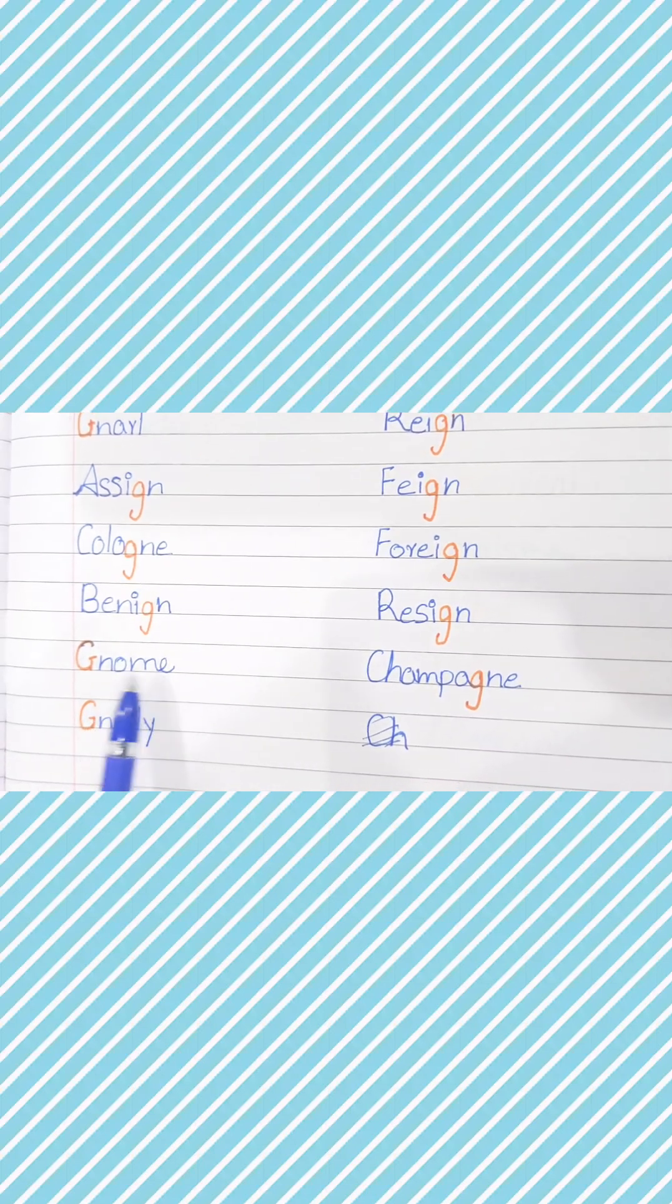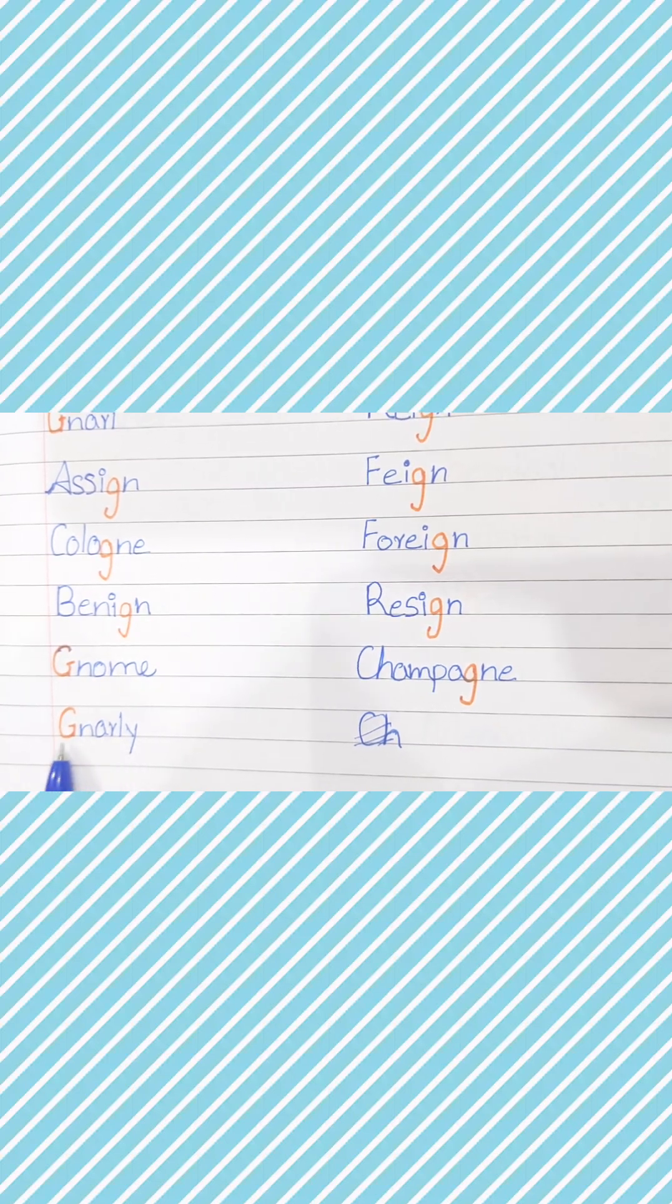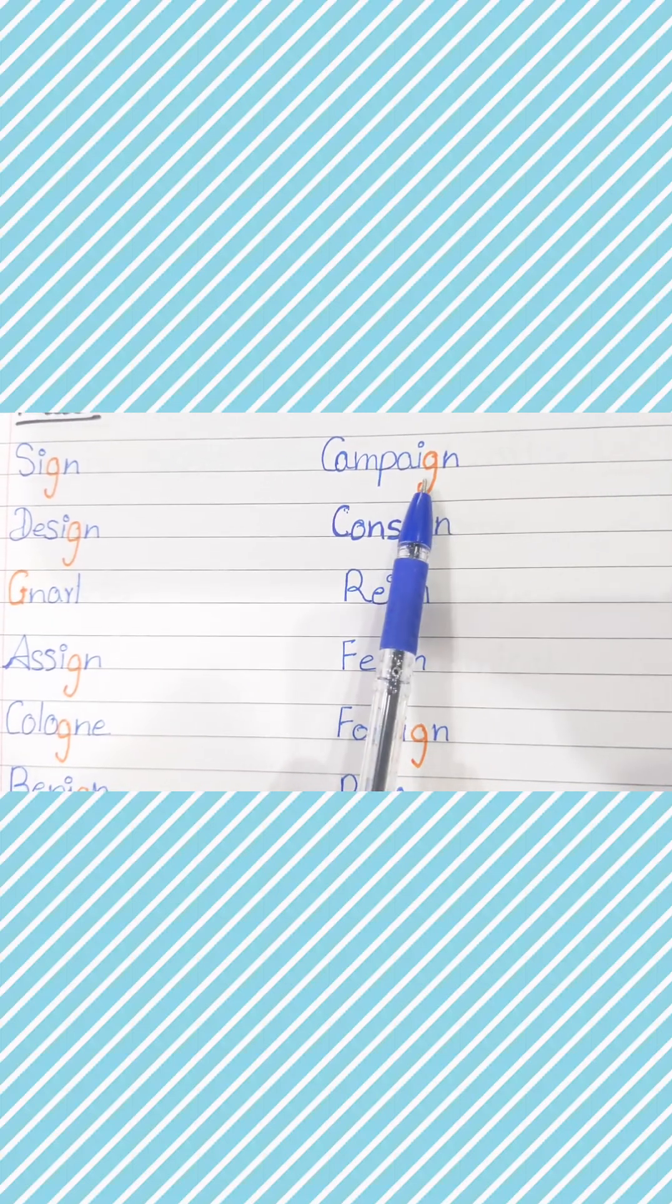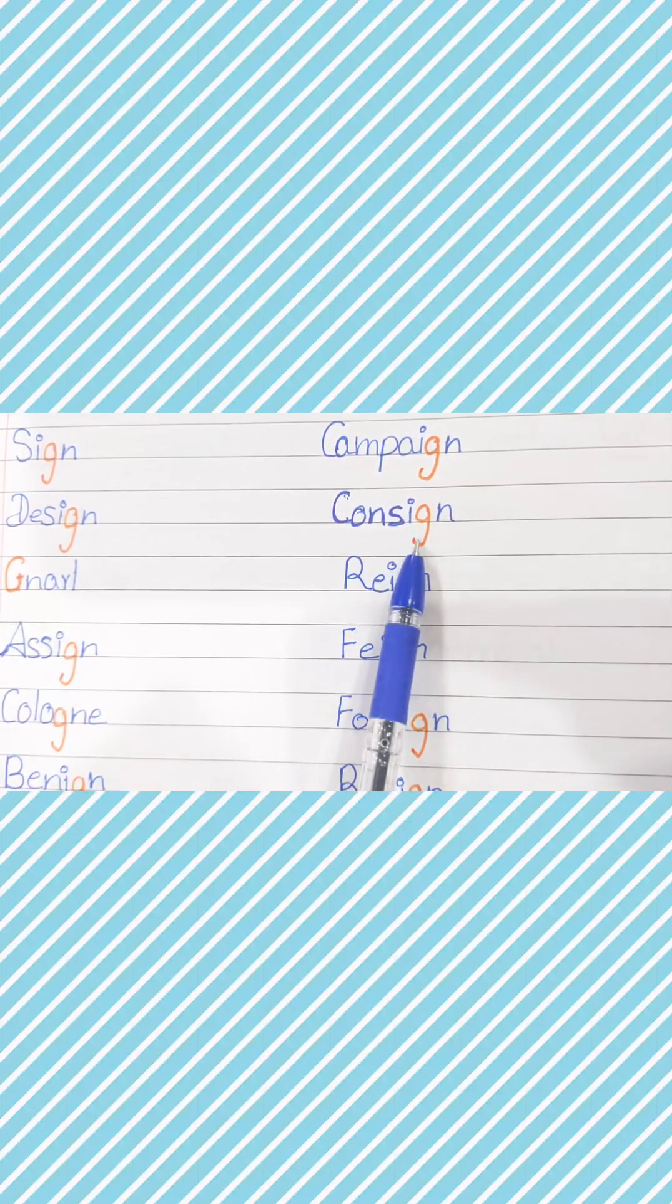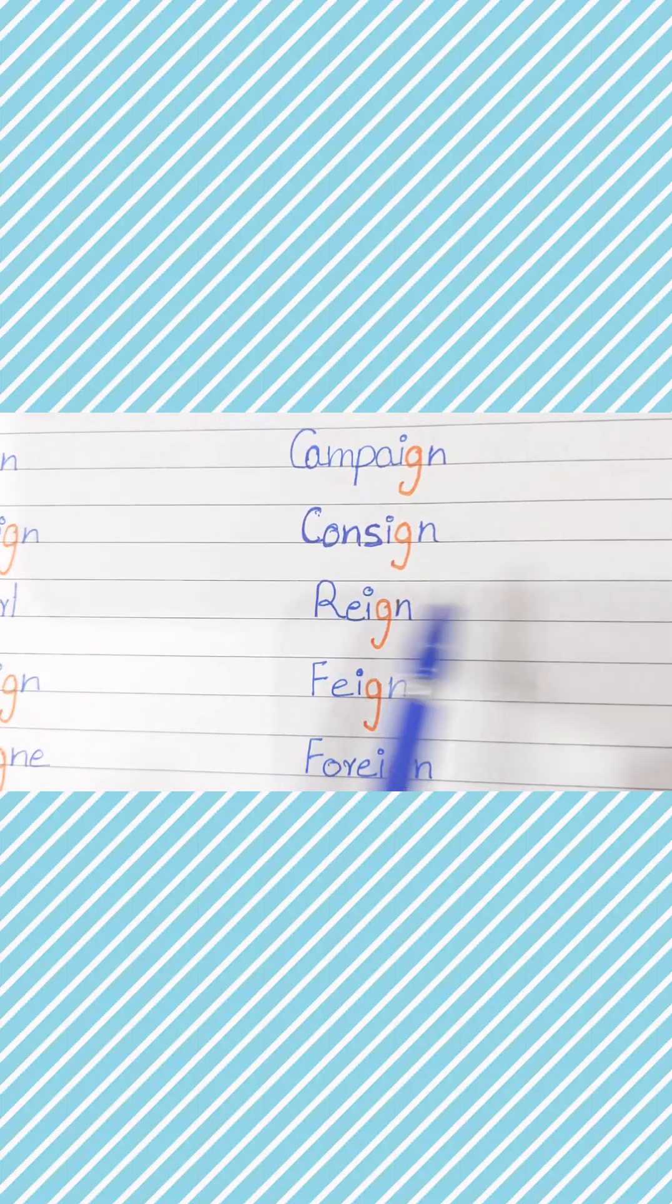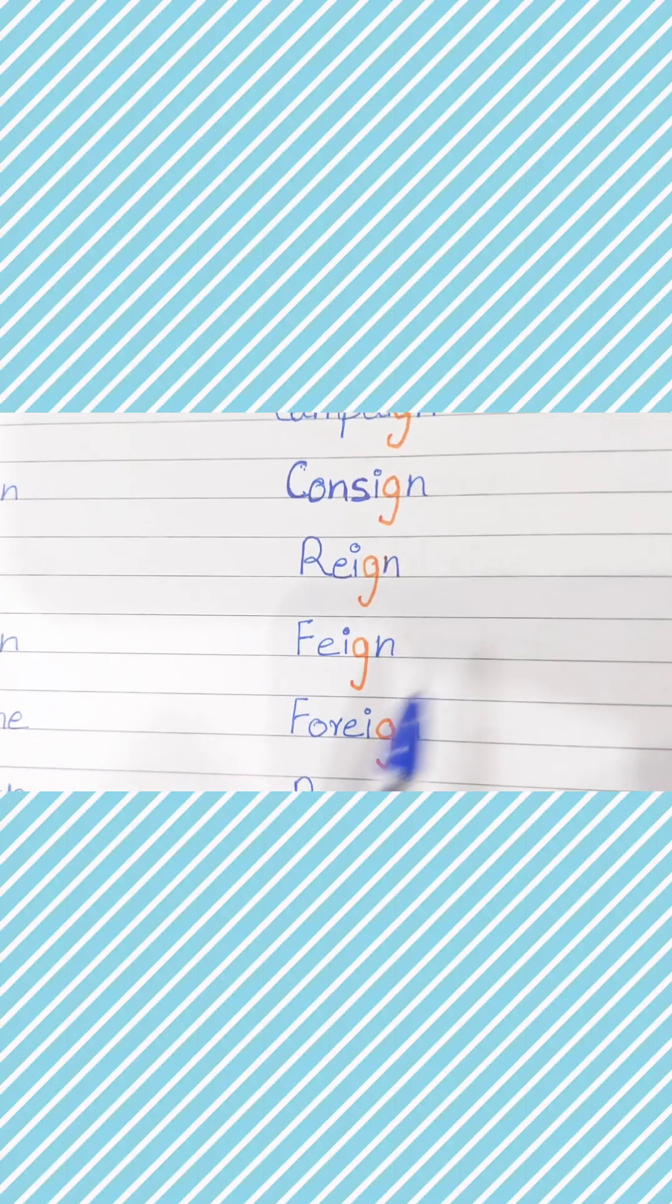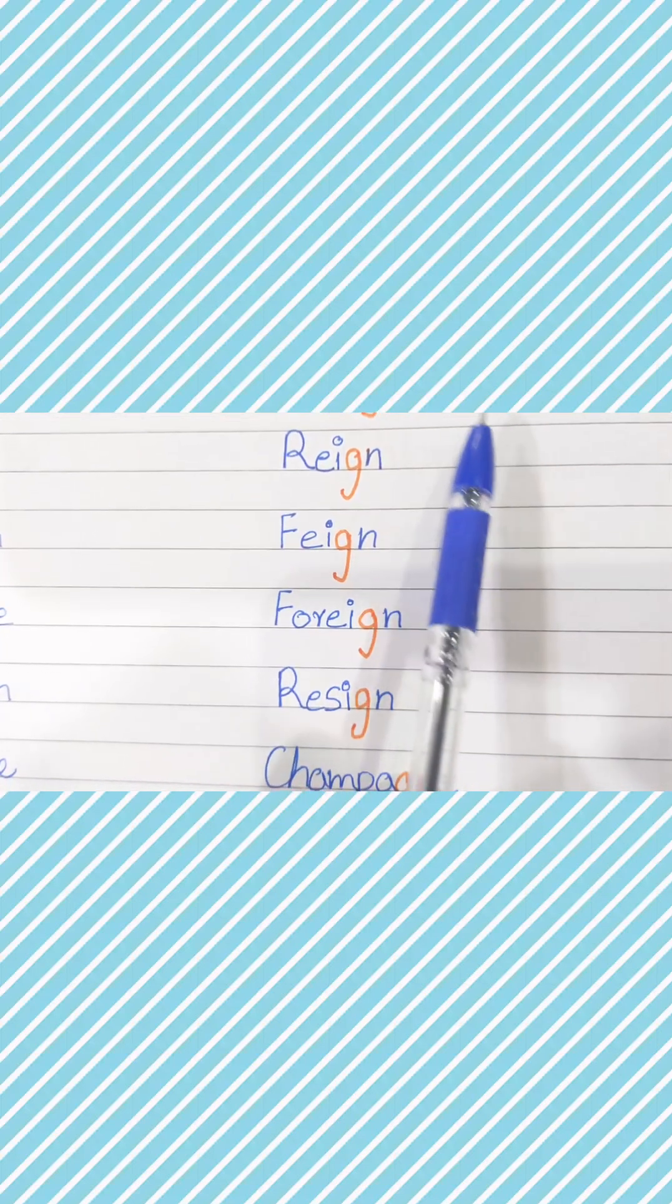Next, cologne. Look at the cologne. Then benign, campaign, consign. What is reign? G is silent because it is before N. Then feign - G is silent.